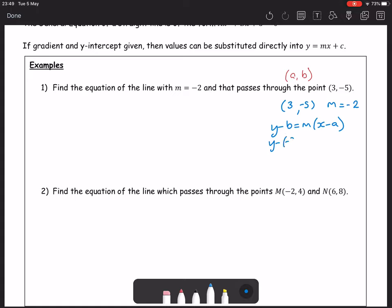Y minus minus 5 is equal to minus 2x minus 3. So y plus 5 is equal to negative 2x plus 6 and subtracting 5 on both sides gives us an equation of y equals minus 2x plus 1 as requested.